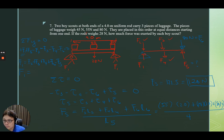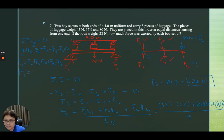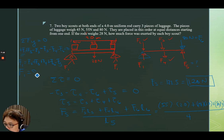F2 is 45 newtons, F3 is 55 newtons, F4 is 28 newtons, F6 is 80 newtons, minus F5 which is 121.5 newtons. The total is 86.5 newtons. So F1 is 86.5 newtons, or approximately 87 newtons to one significant figure. These are the two answers.